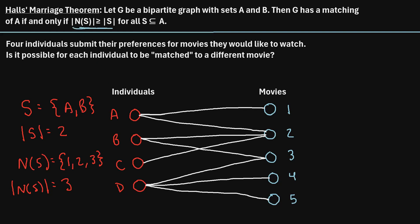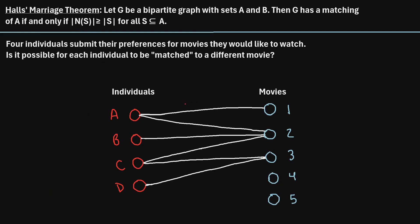Now let's consider a scenario where this condition doesn't hold. Again, individuals are submitting their preferences for movies, but the preferences are a little different this time. Let's see if we can find a matching such that no individual has to watch the same movie. Individual B has said they're only willing to watch movie 2, so we must match B with movie 2. Similarly, Individual D has said they're only willing to watch movie 3, so we must match D with movie 3. We could match Individual A with movie 1, but Individual C can only be matched with movie 2 or movie 3, which are both already taken. So there is not a matching in this scenario.